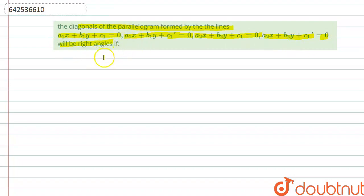We have to find the condition when these four sides form a parallelogram and the diagonals bisect at right angles.